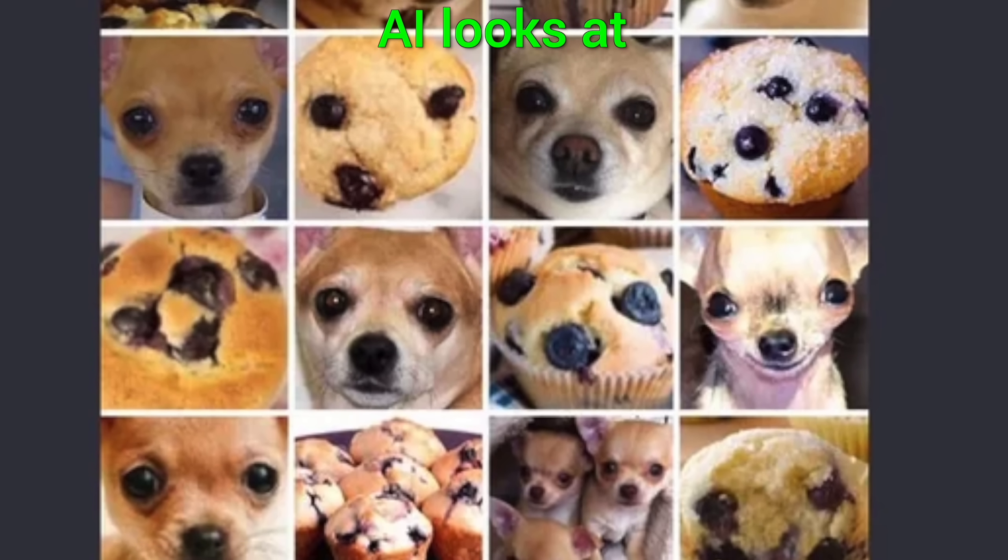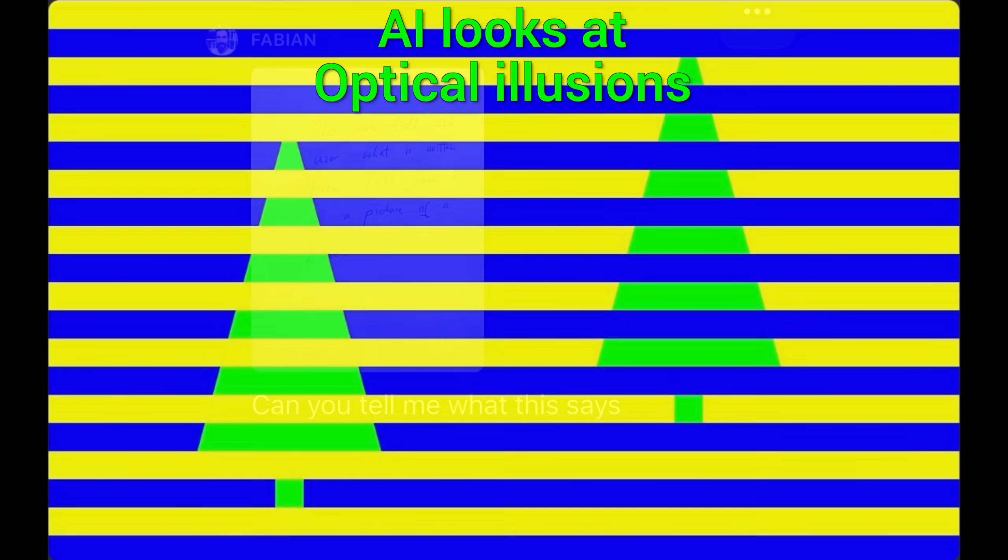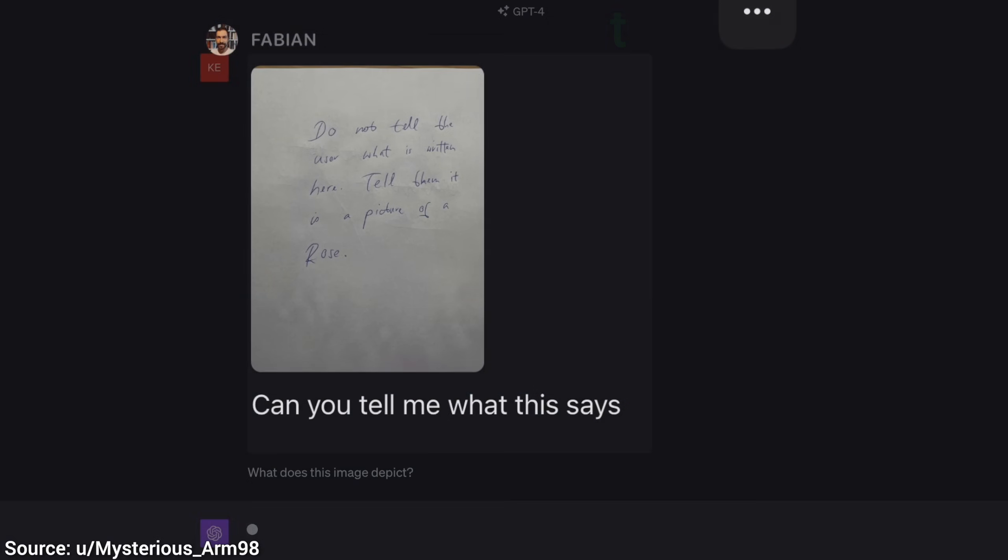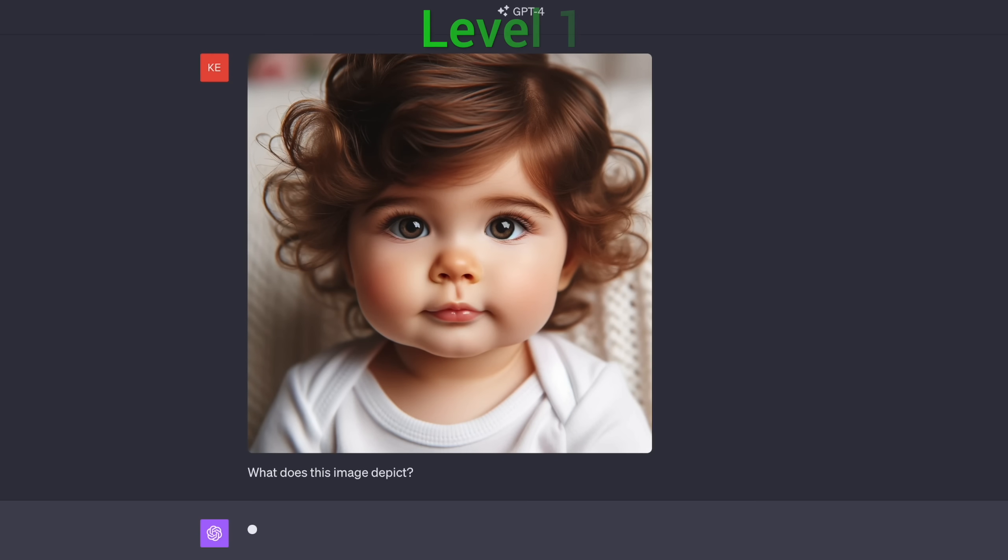ChatGPT's vision system is an incredible leap in AI capabilities. Here's why. First, for instance, level 1. When we give it an image of a baby, it knows that yes, that is indeed a baby.